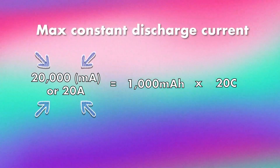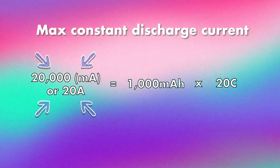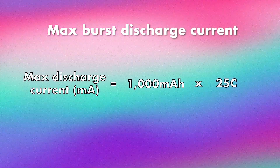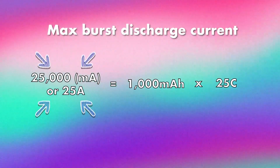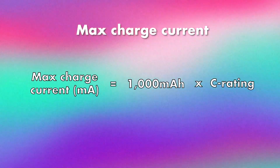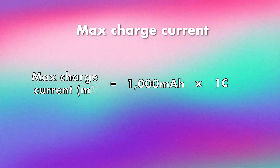To calculate the burst discharge current for this battery — with a capacity of 1000 mAh and a burst discharge C rating of 25C — we take 1000 mAh multiplied by 25C to get 25A for the burst discharge current. If your application pulls more than 20A continuously, you'll either need a battery with a higher capacity or a higher discharge C rating, or both. This battery has a maximum charge C rating of 1C, so 1000 mAh multiplied by 1C gives a maximum charge current of 1A.